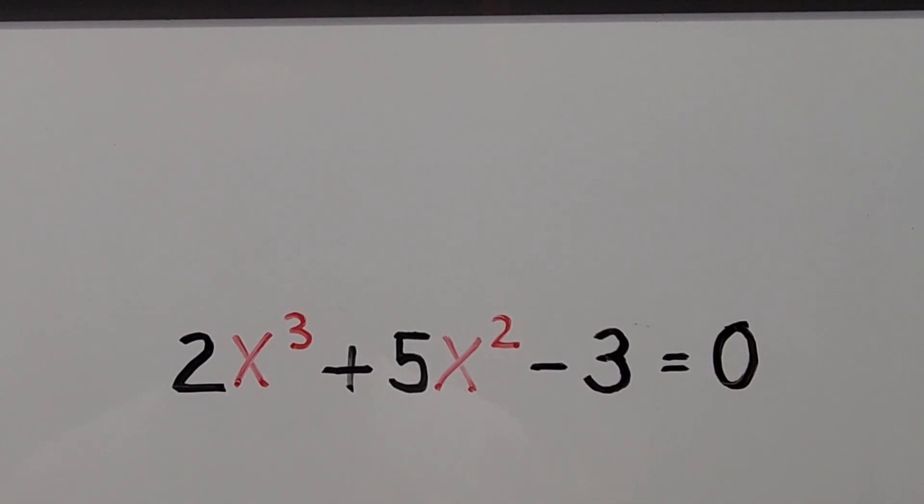Hello everyone, welcome to Kashiano Easy Math. In this video we have here a cubic equation 2x³ + 5x² - 3 = 0.